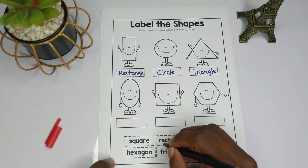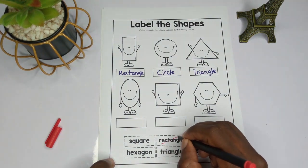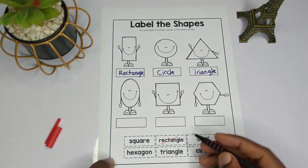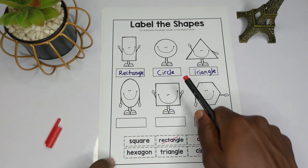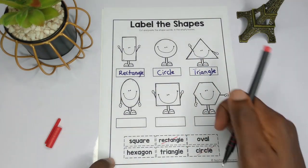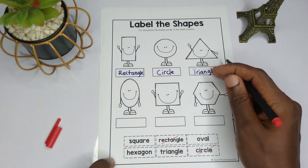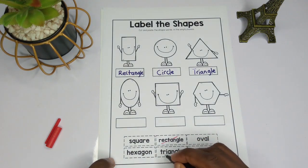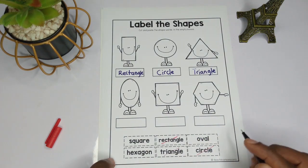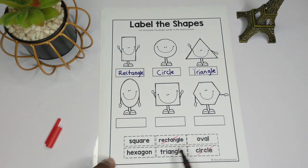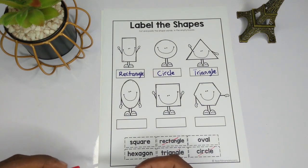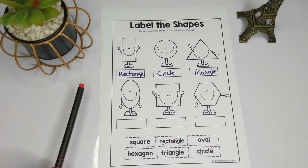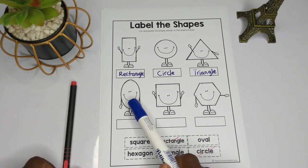So far we have identified rectangle, circle, and triangle. Let me cross out the words we have identified. We are only left with square, hexagon, and oval. Let's continue.